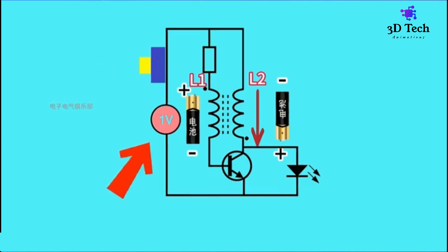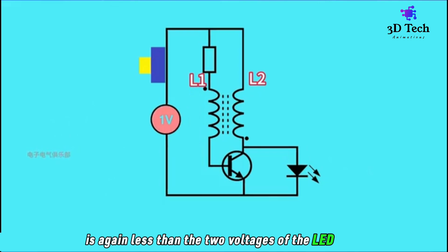In this way, the battery voltage and the voltage generated by L2 superimpose to light up the LED. When the L2 voltage plus the battery voltage is again less than the two volts needed for the LED, the cycle repeats.